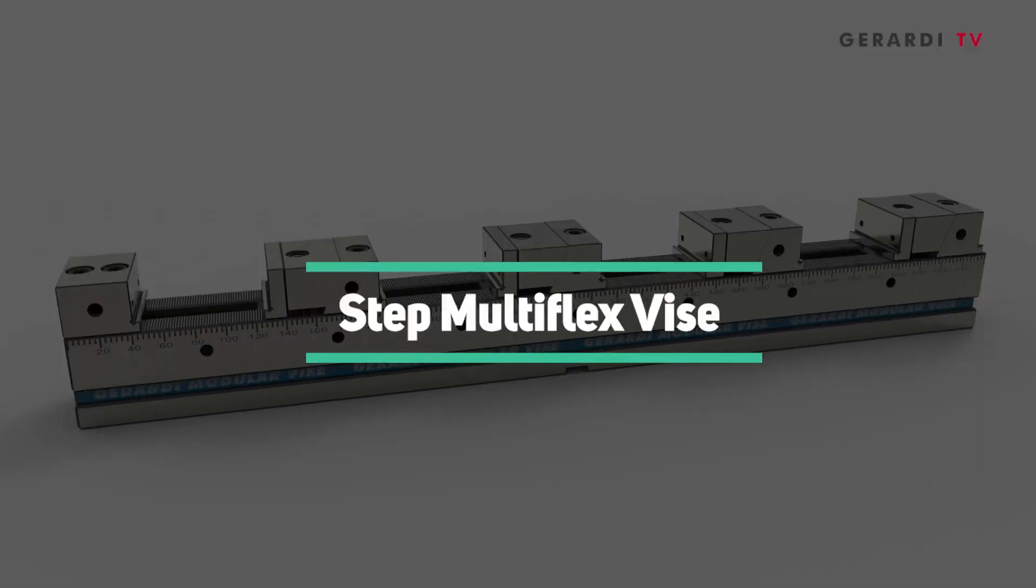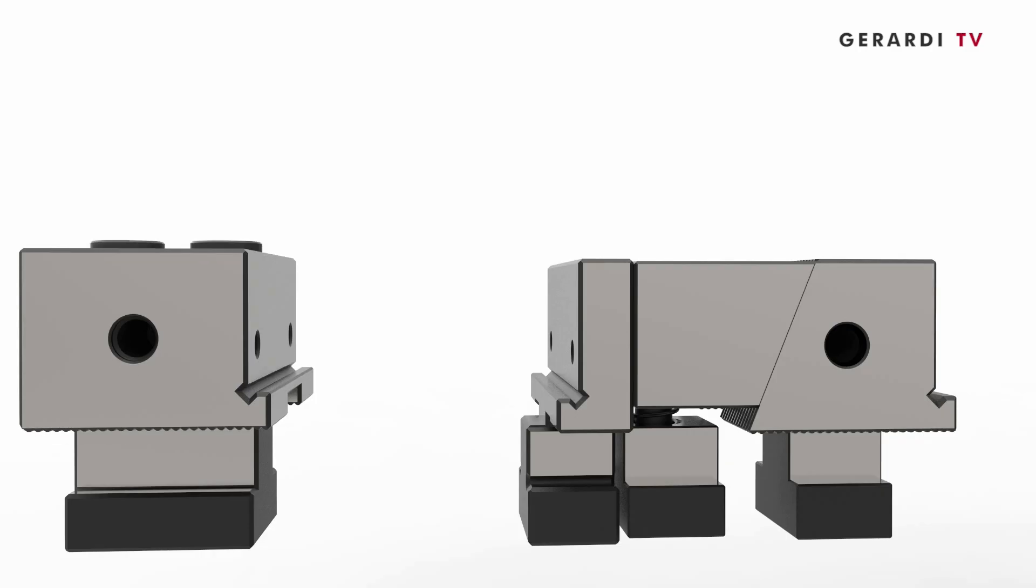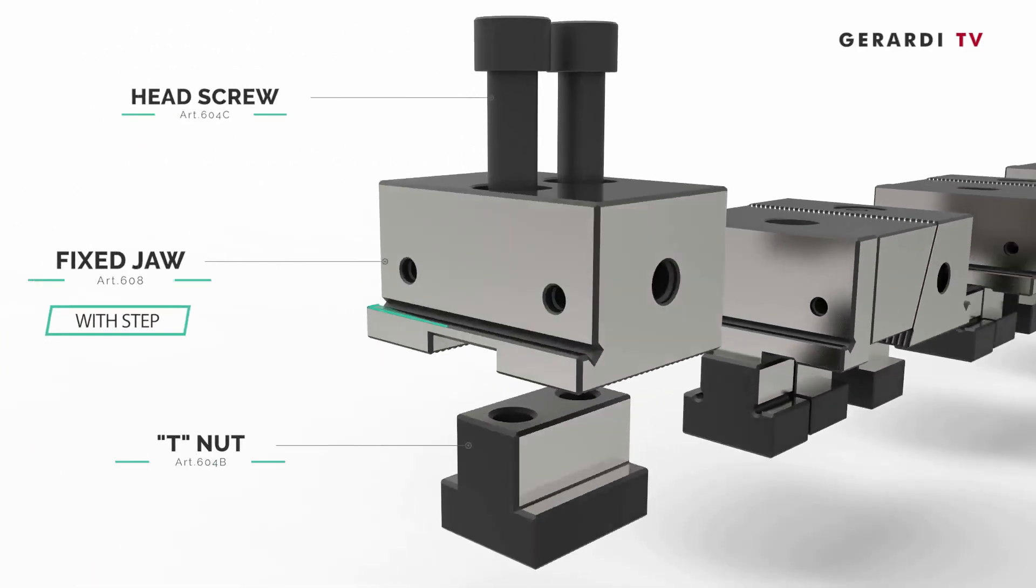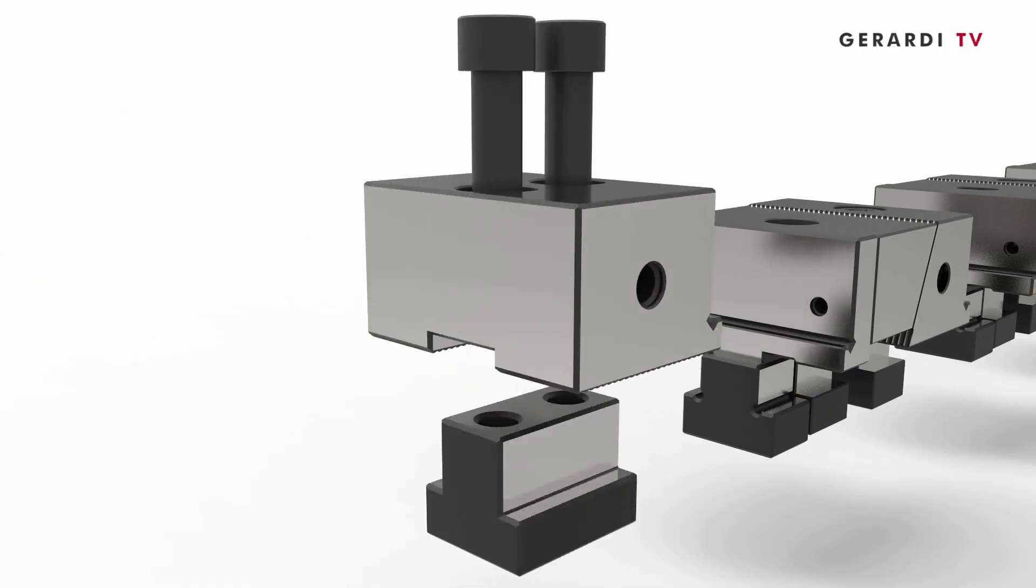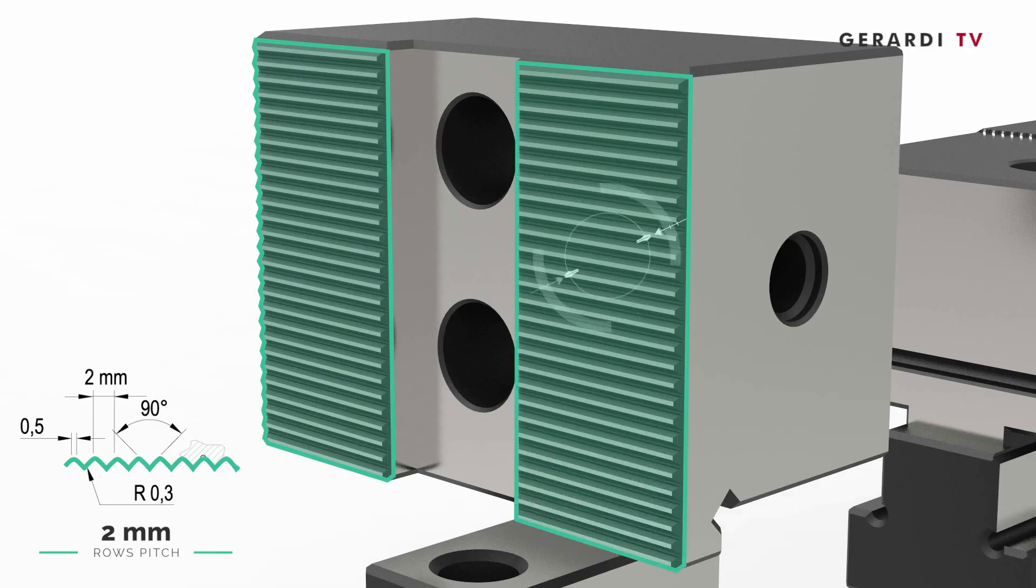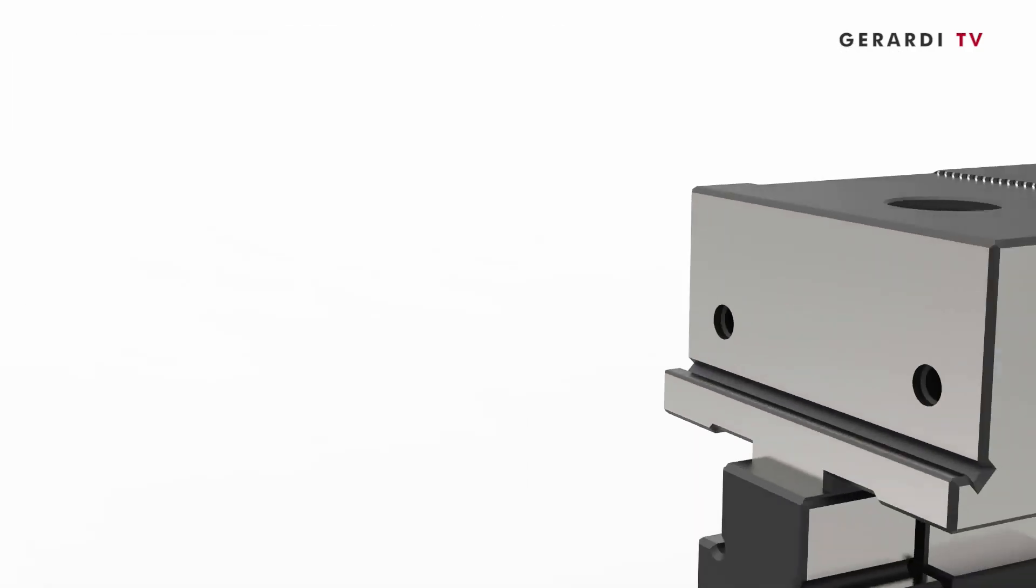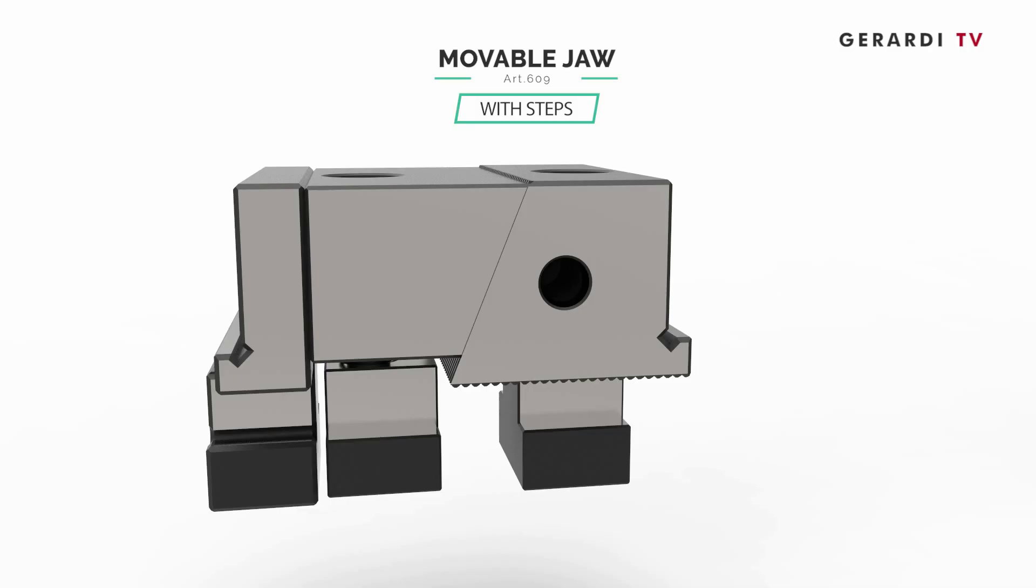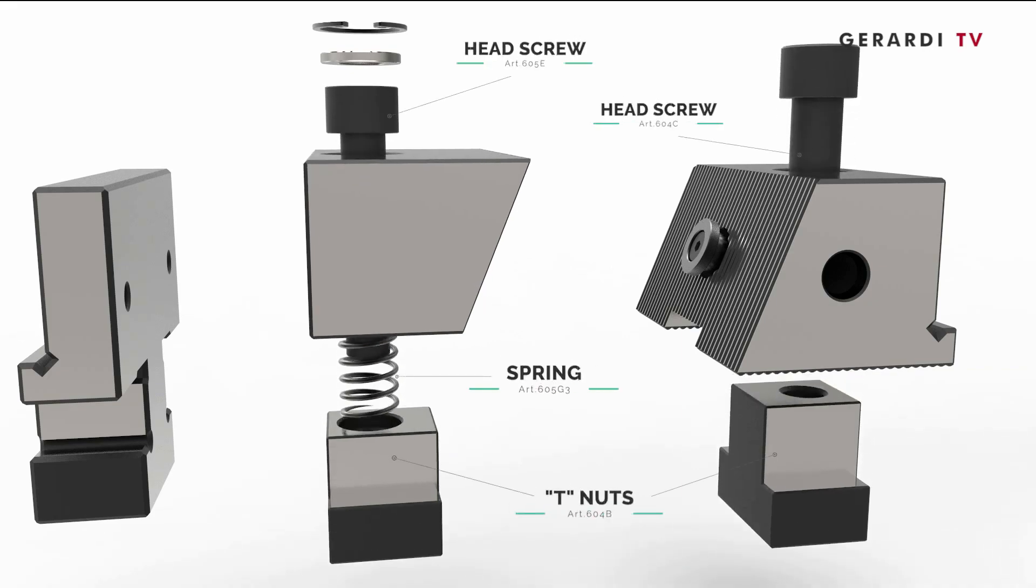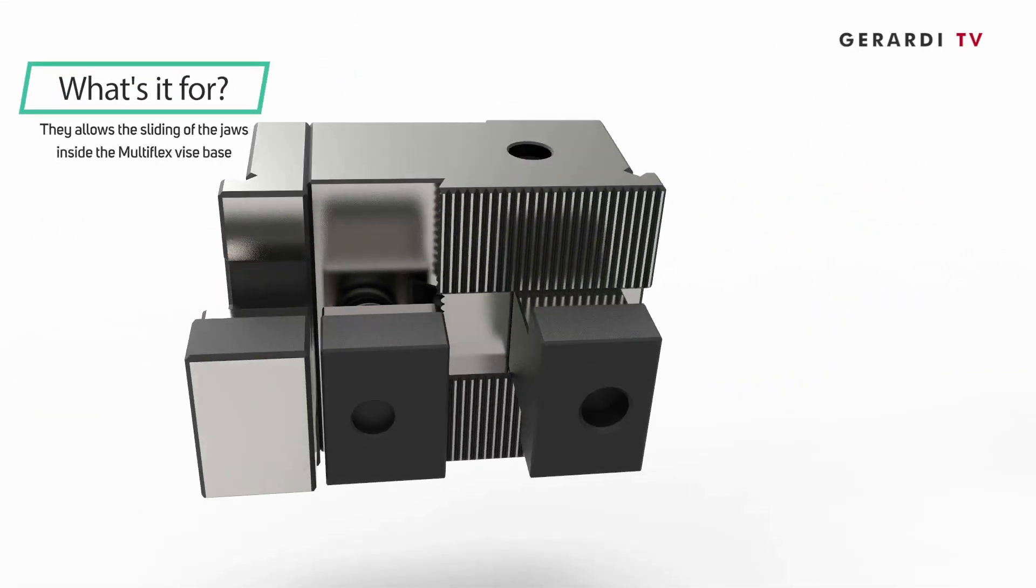Step multi-flex vise has the possibility to clamp workpieces on the jaw's integral steps. Of course, the clamping and the alignment is still the same, it results from the ground-teeth rack with 2mm pitch.